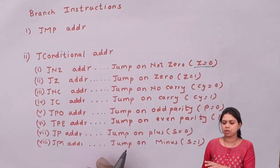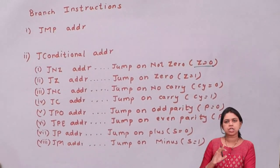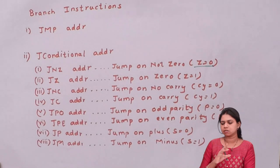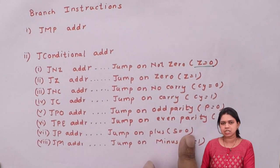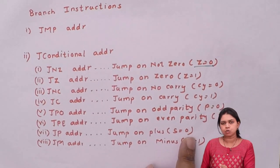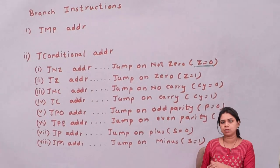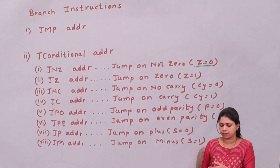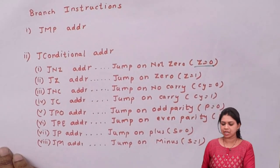JP address is jump on plus, and JN address is jump on minus. To check the positive or negative nature of a number, we check the sign flag. If my sign flag is equal to zero, it means my number is positive and I will jump onto some address. If my sign flag is equal to one, then my number is negative and I will jump onto some address.